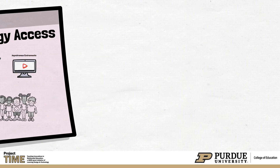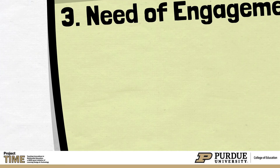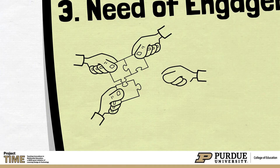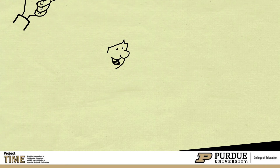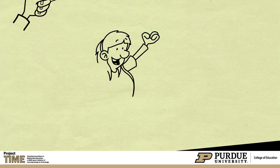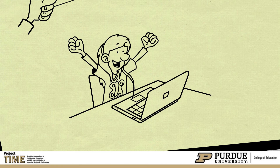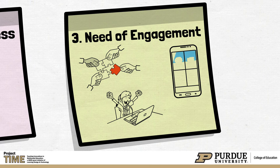Third, assess the need for engagement. Consider whether students will need opportunities for collaboration. Consider whether there are social or emotional needs within a class or for a particular activity that would be more successful through real-time interaction. If this is a concern, then synchronous learning would be beneficial.